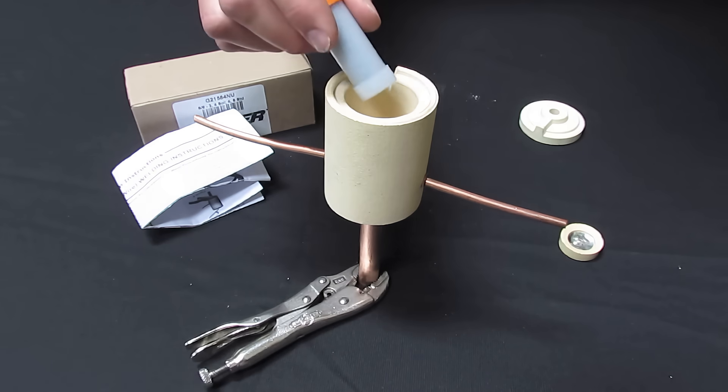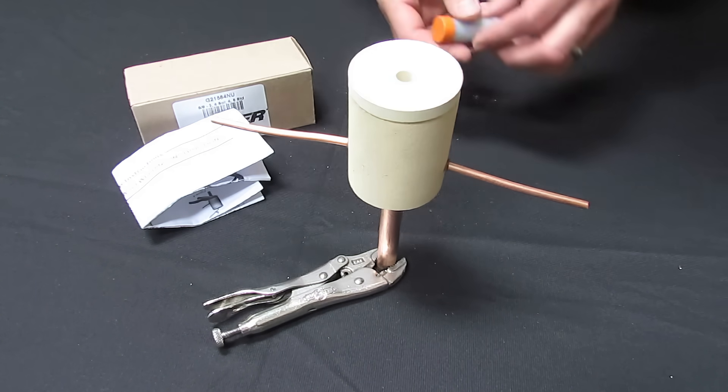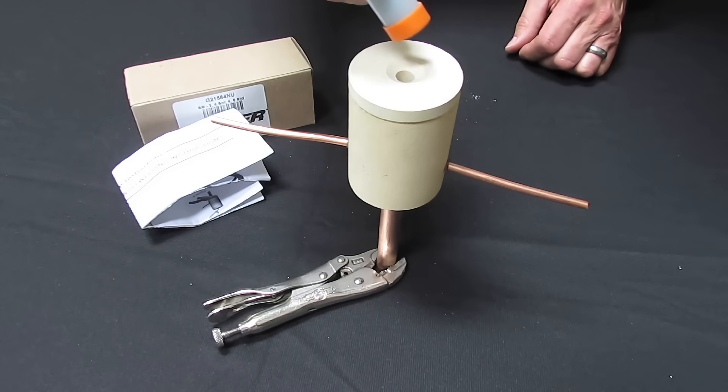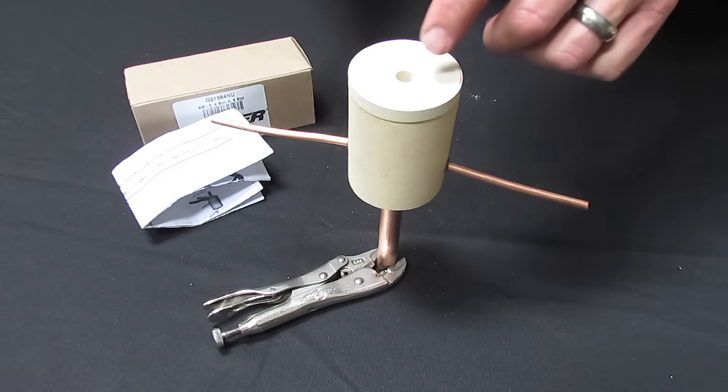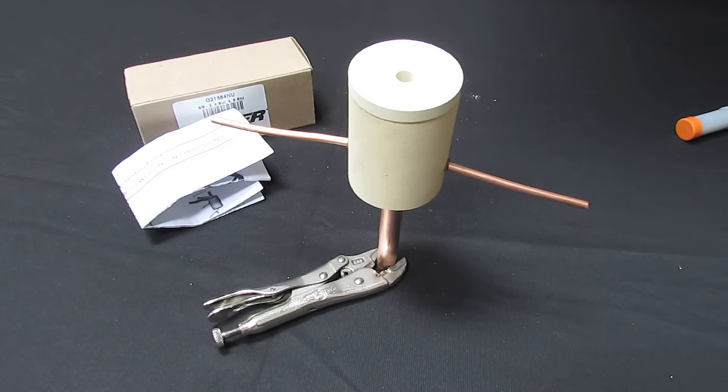You'll pour in the weld metal powder. You'll put on the lid and pour in the starter powder. You'll pour all that in and leave about 10% around the rim of the hole. And that gives the spark a place to ignite the powder, and then it drops down through the hole and ignites the rest of the powder.